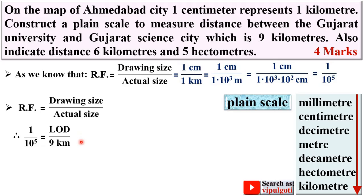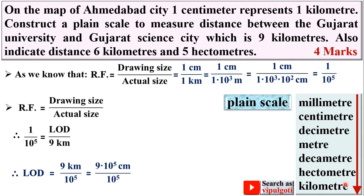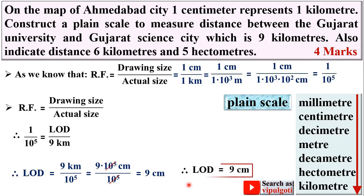Simplifying: LOD equals 9 kilometers divided by 10⁵. Converting 9 kilometers to centimeters — 1 kilometer equals 10⁵ centimeters — the 10⁵ terms cancel, giving LOD equals 9 centimeters.